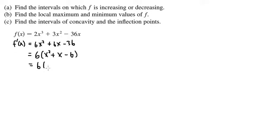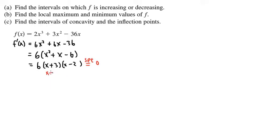So we have 6 out front, and then two parentheses. We need x and x, and we need two numbers that multiply to negative 6 and add up to positive 1, so we need plus 3 and minus 2. We then set this equal to 0 to find the critical numbers. x plus 3 equals 0 gives x equals negative 3; likewise, x minus 2 equals 0 gives x equals positive 2. These are the critical numbers.